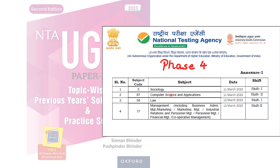For Phase 4: Sociology will be conducted on 11th March in Shift 1, Computer Science in Shift 2, and on 12th March, Law in Shift 1 and Management in Shift 2. The Phase 4 admit cards are available now — you can download them from the NTA website using your application ID and date of birth.